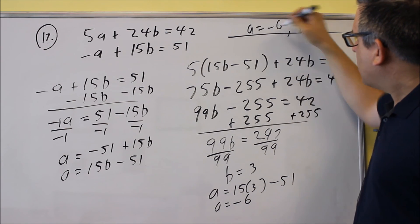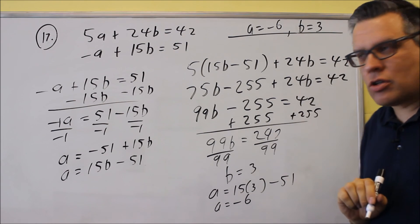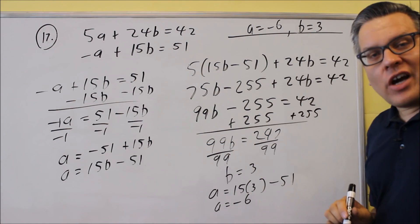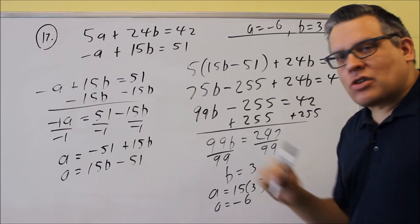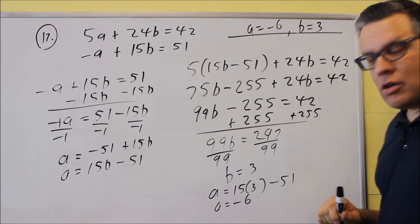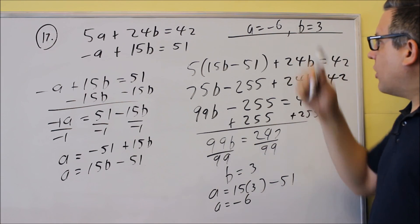So now I know that my other answer is negative 6. So if you're doing substitution, what's nice is you're already going to have one equation where the variable is isolated. So that makes it easy to solve for the second time. Again, we had b is 3, we just threw it into here. That gave us our a. So that's both of our answers.